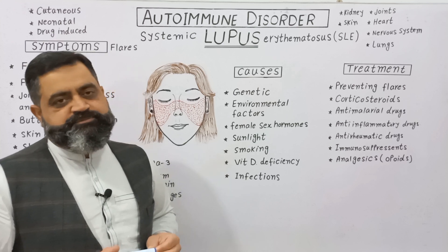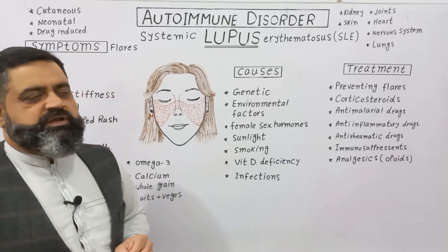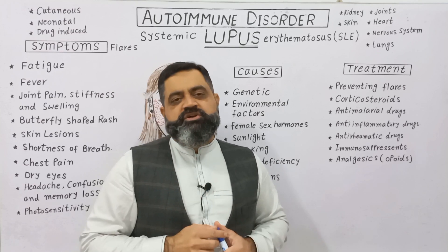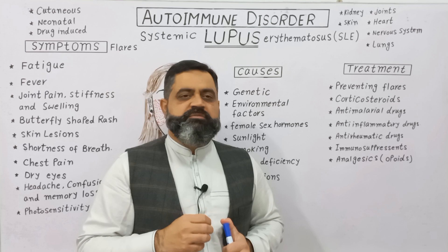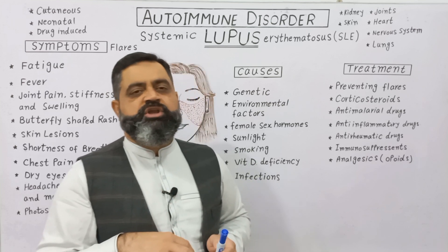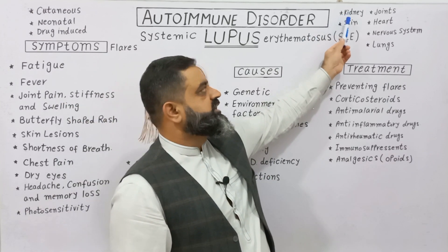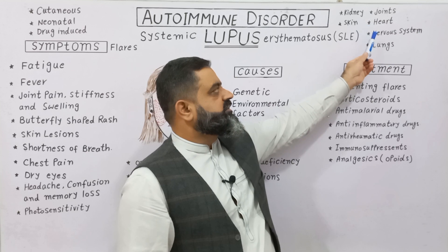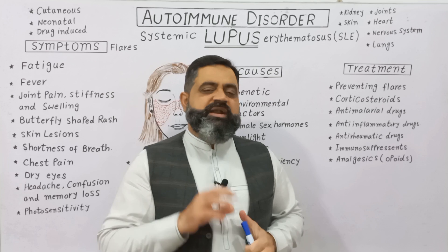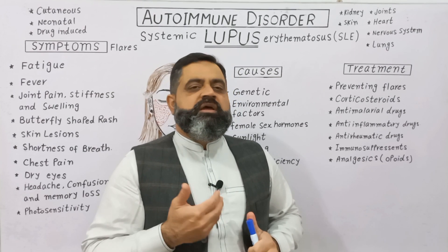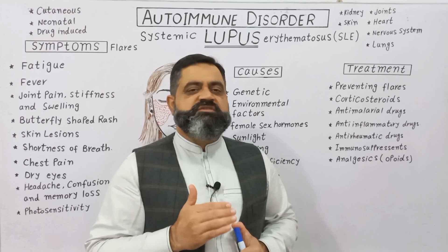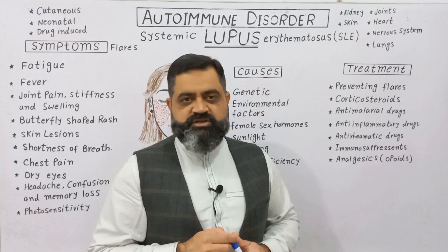This disease affects all major organs of our body. When the immune system becomes defective and backfires on its own body organs, it can destroy the kidneys, skin, joints, heart, nervous system, and lungs. If our immune system attacks these vital organs, there is inflammation in these organs.